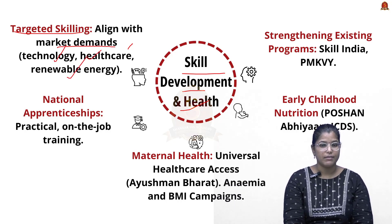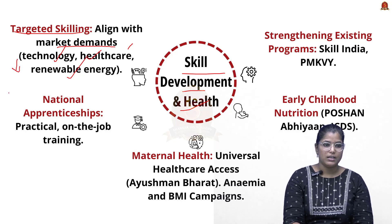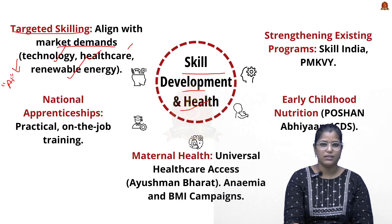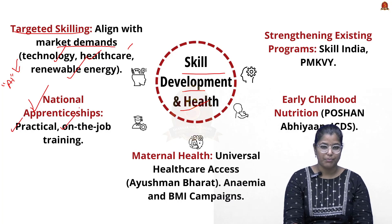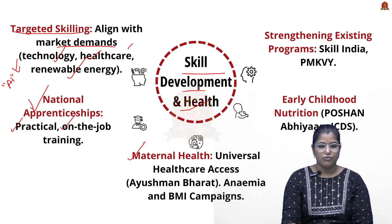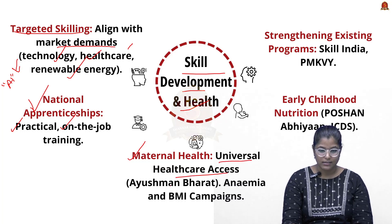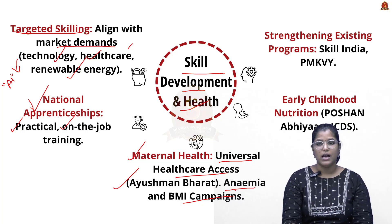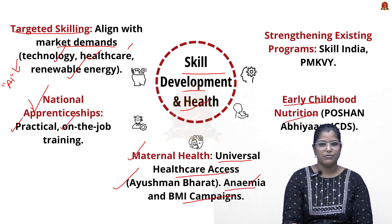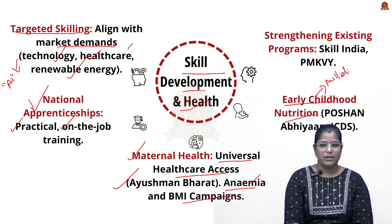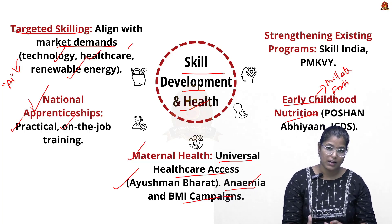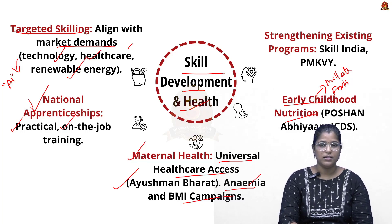National apprenticeship programs can provide hands-on, on-the-job training. For health, universal healthcare access through Ayushman Bharat and anemia and BMI campaigns conducted in schools and colleges is vital. Existing programs like Skill India and PMKVY need to be strengthened. For child nutrition, schemes like Poshan Abhiyan and ICDS should be leveraged, supplemented with millets and fortified foods to ensure children receive adequate nutrition at the right age.